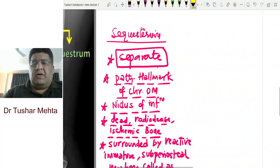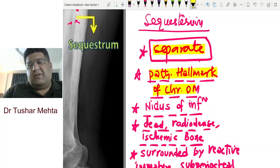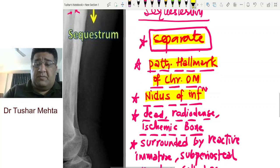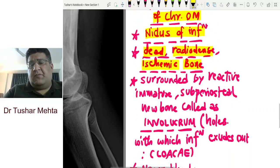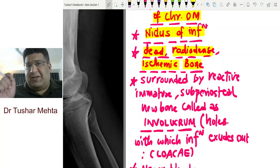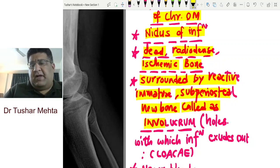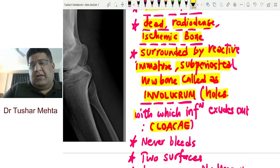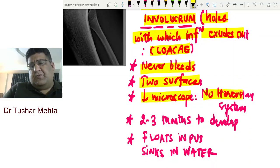Whether asked in MCQs, theory, or viva — remember these 10 points about sequestrum: (1) separate from underlying viable healthy parent bone; (2) pathological hallmark of chronic osteomyelitis; (3) chief nidus of infection — infection persists until sequestrum is removed; (4) dead, radio-dense, ischemic, necrotic, non-viable piece of bone; (5) surrounded by reactive immature subperiosteal newborn bone called involucrum; (6) involucrum has holes called cloaki through which infection exudes out; (7) never bleeds; (8) two surfaces; (9) no Haversian canals under microscope; (10) takes two to three months to develop; floats in pus, sinks in water.